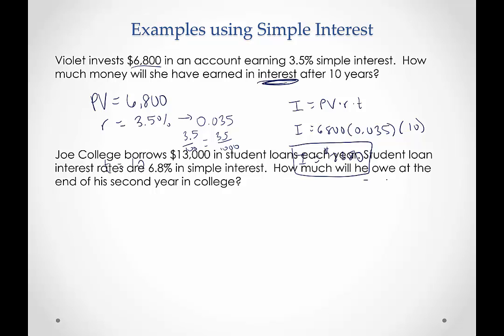So this one's saying how much will he owe? So that's the total amount, including the principal, that $13,000. And there's a couple of key things here. It says that he borrows $13,000 each year, and we're talking about two years here. So we want to probably do these separately.